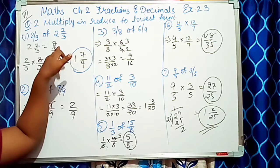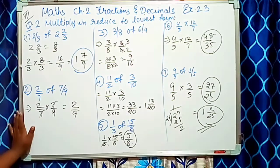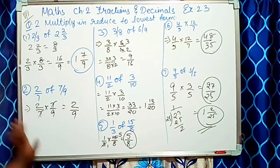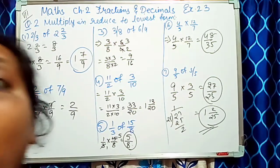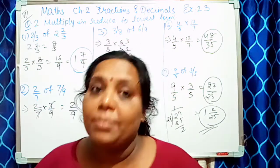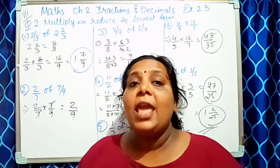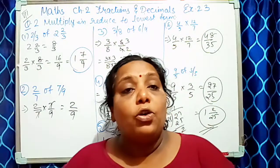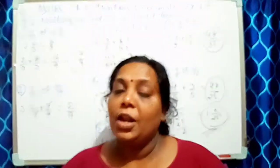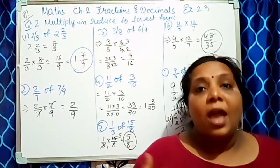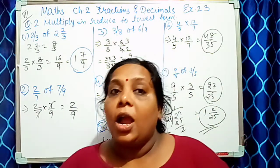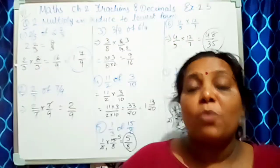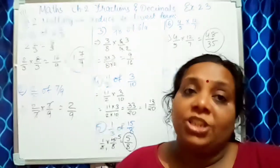Mix fraction ko simple improper fraction ya proper fraction kar do, usse multiplication karo. Numerator ko numerator se multiply karte hain aur denominator ko denominator se multiply karte hain — yeh ek cheez dhyan rakhni hai jab bhi fraction ka multiplication ho. Agar samajh aaya toh comment section mein likho.